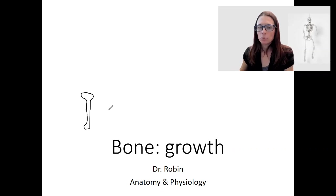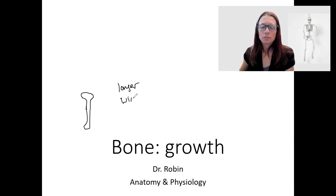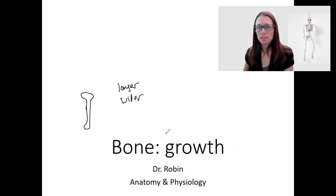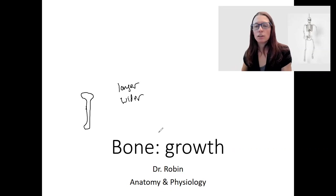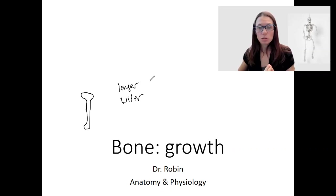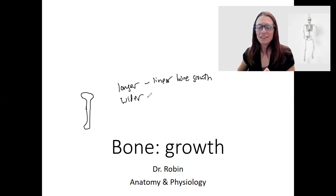What does that bone need to do? It needs to get longer and it needs to get wider. So there are two separate processes that do those two things. One is going to be called linear bone growth, and the other one, the widening, is appositional growth.